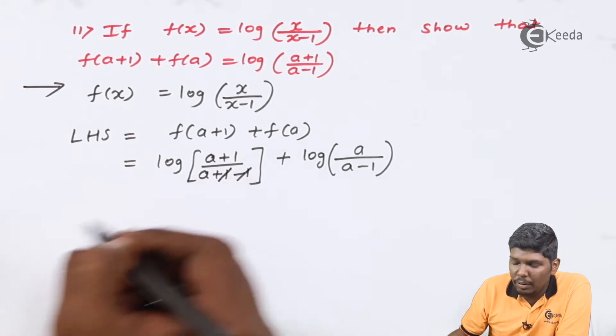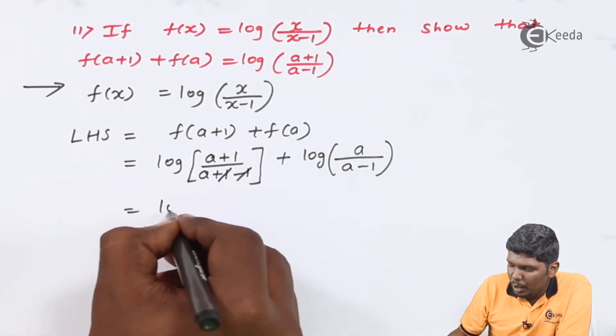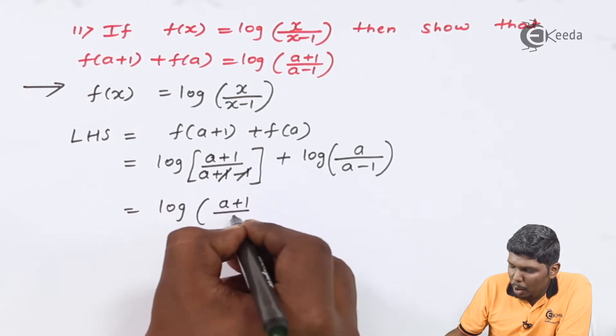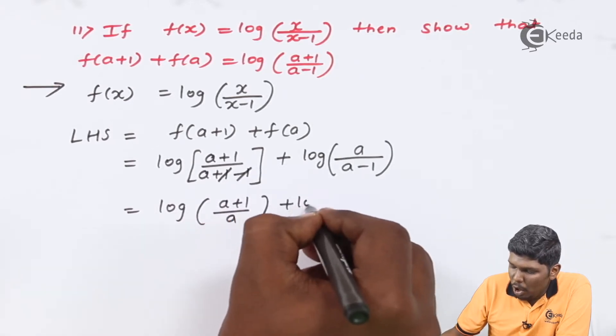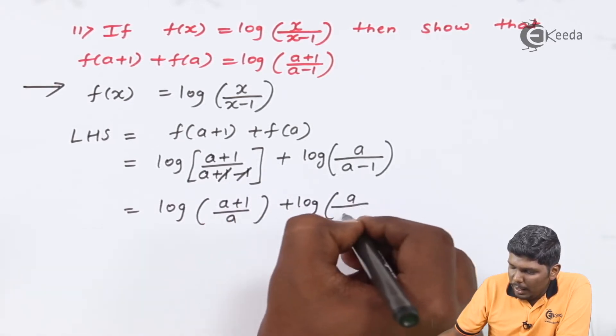Here, plus 1 and minus 1 will be cancelled and we will get log((a+1)/a) + log(a/(a-1)).